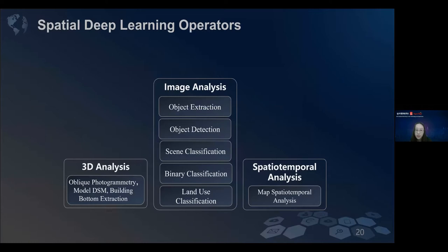These are the spatial deep learning operators. We can do 3D analysis, spatial temporal analysis, and image analysis. For image analysis, we can extract some objects or detect some objects and do binary or multiple classification.